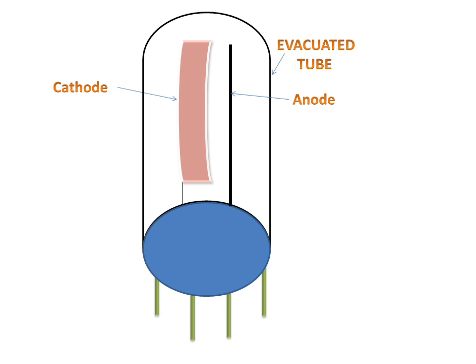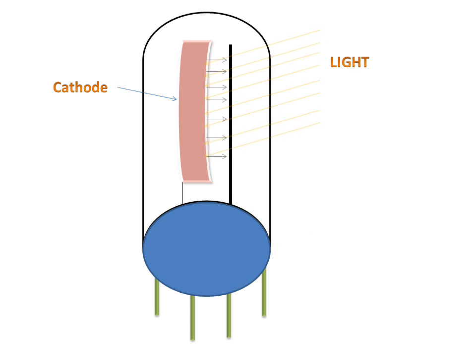Then what will happen? When light strikes the cathode, photoelectrons are produced and move towards the anode. These photoelectrons create current in the circuit, which we use for further applications.